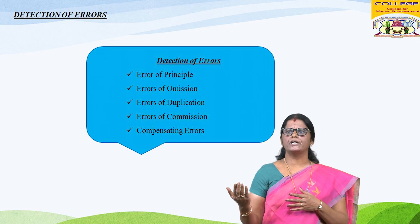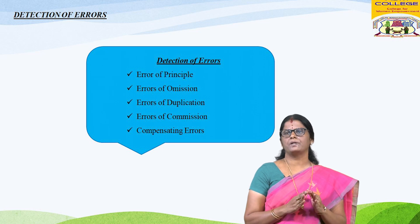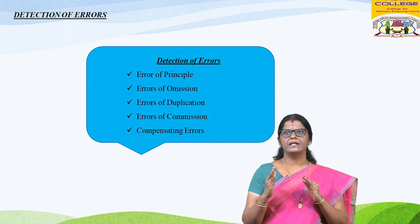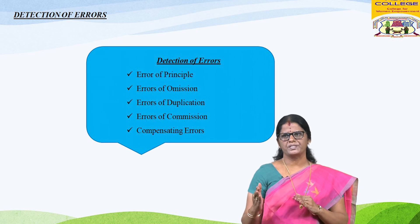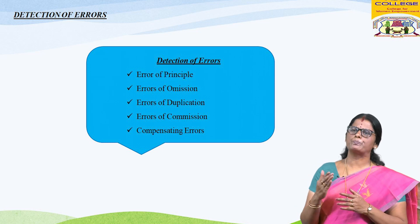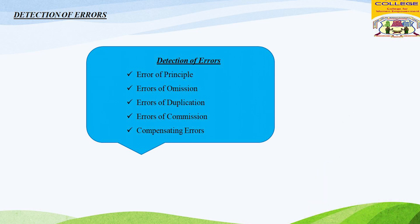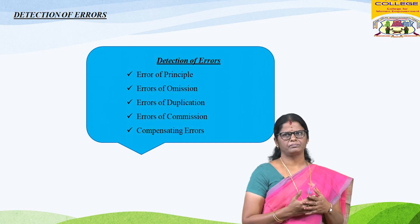For example, where income received is credited to the personal account of the person making the payment — such as commission received from Mr. A being credited to Mr. A's account instead of the commission account — it will increase creditors in the balance sheet and reduce profit in the profit and loss account. Where the payment of expenses is posted to the personal account of the person who receives payment — for example, rent paid to Mr. A wrongly debited to Mr. A's account — it will increase profit and also increase debtors in the balance sheet.